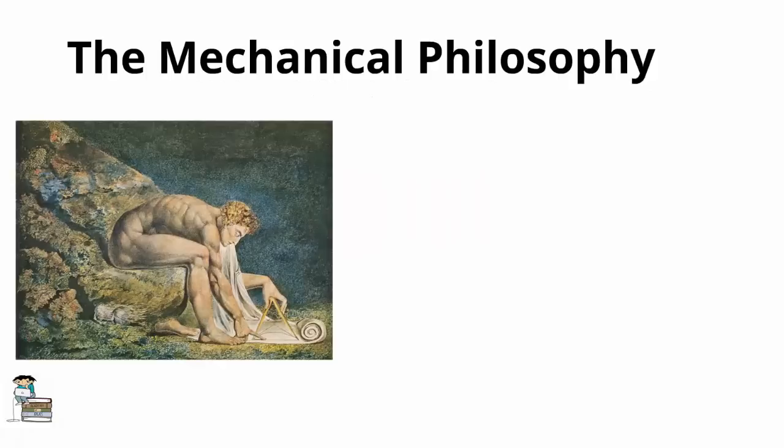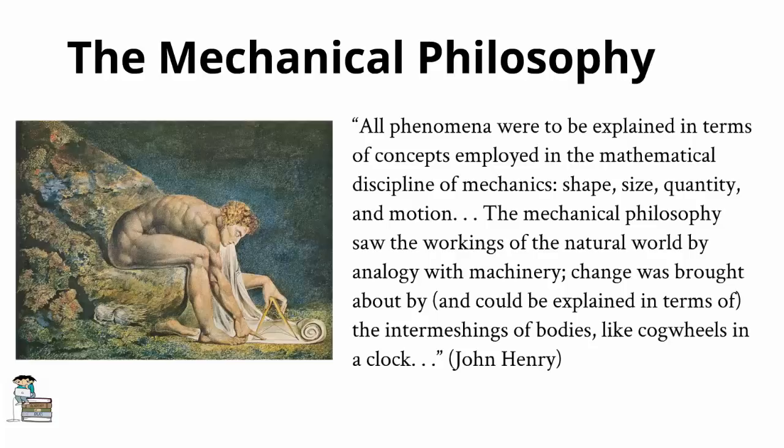The philosophical system which largely came to supplant the Aristotelian worldview and emphasized quantity over quality is called the mechanical philosophy. John Henry nicely explains the basic tenets of the mechanical philosophy in his book, The Scientific Revolution and the Origins of Modern Science. All phenomena were to be explained in terms of concepts employed in the mathematical discipline of mechanics, shape, size, quantity, and motion. The mechanical philosophy saw the workings of the natural world by analogy with machinery. Change was brought about by, and could be explained in terms of, the intermeshings of bodies, like cogwheels in a clock.